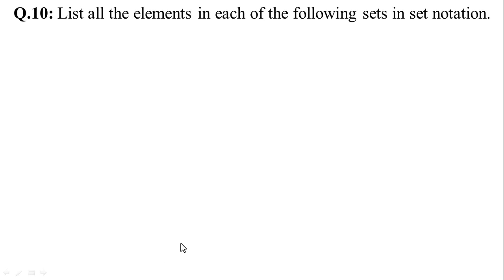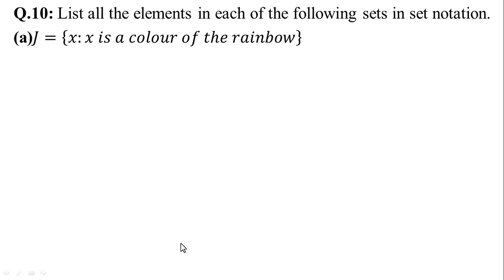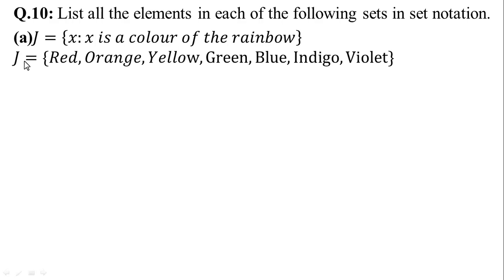In question number 10, list all the elements in each of the following sets in set notation. In part A, J = {x : x is a color of the rainbow}. Writing the rainbow's colors: J = {red, orange, yellow, green, blue, indigo, and violet}. There are 7 colors in the rainbow.